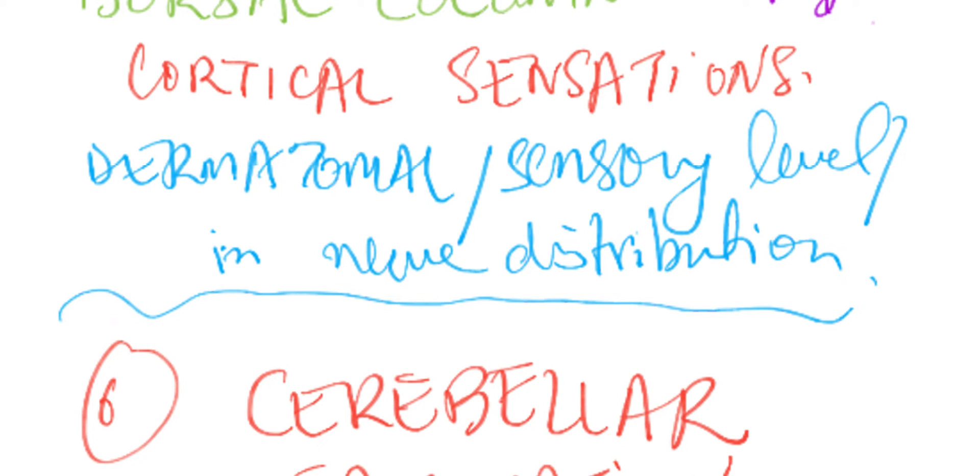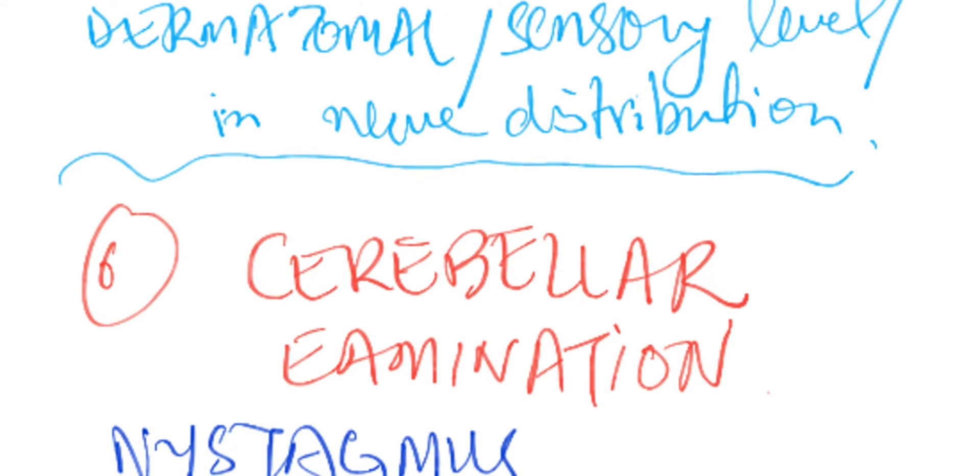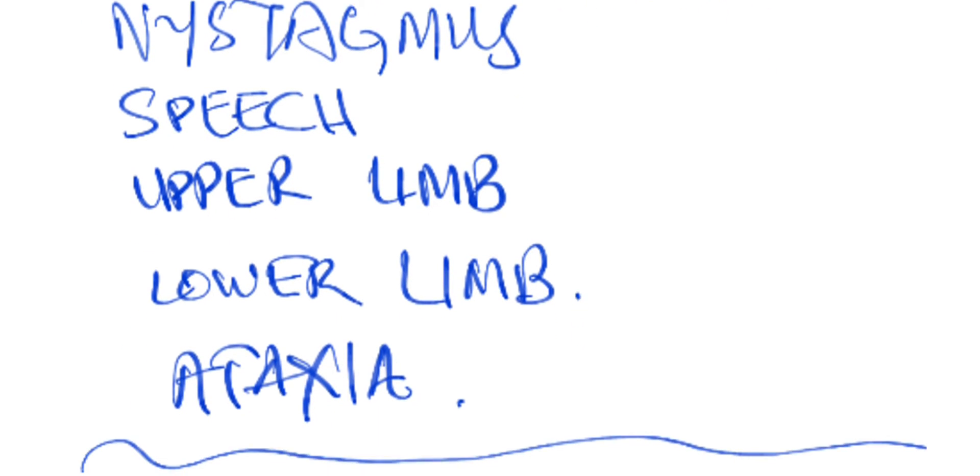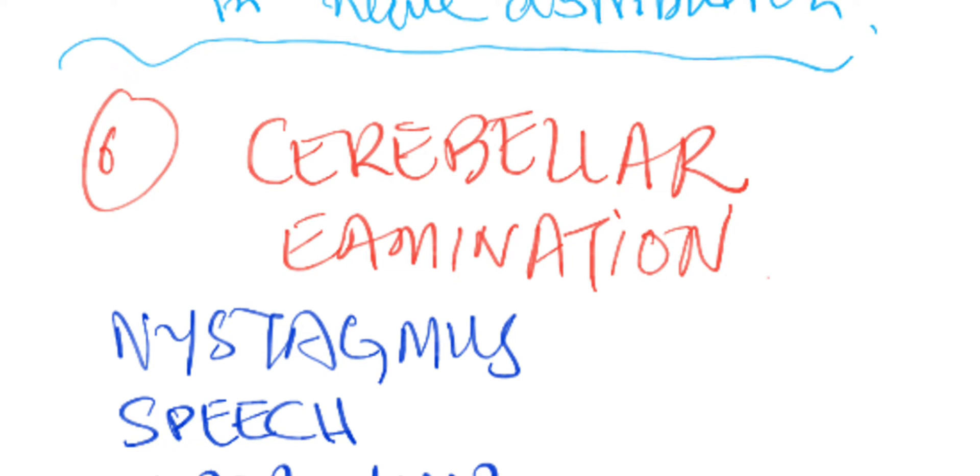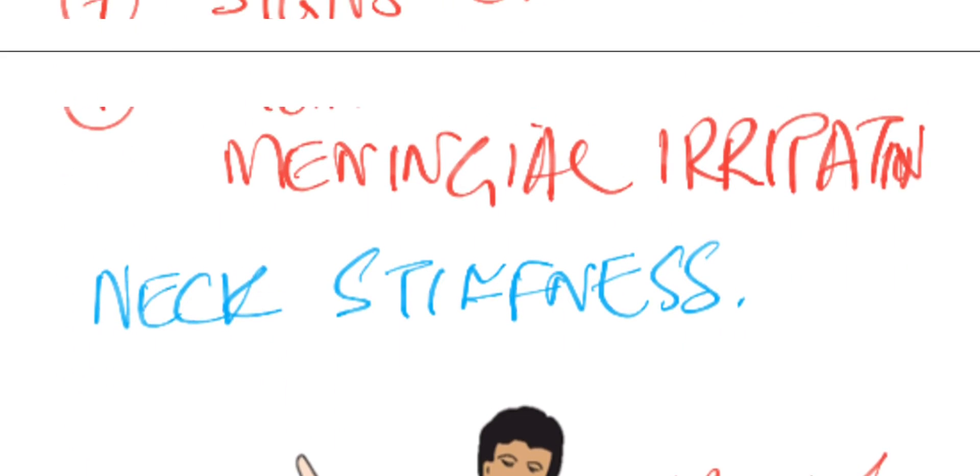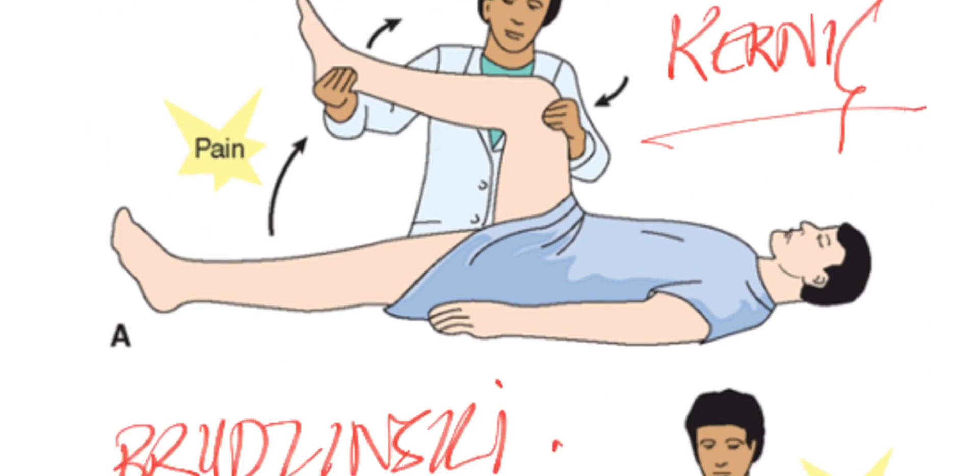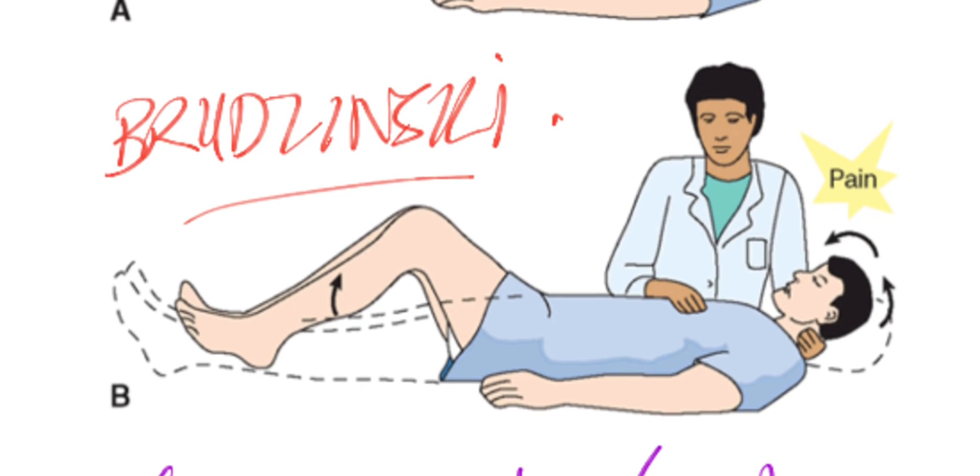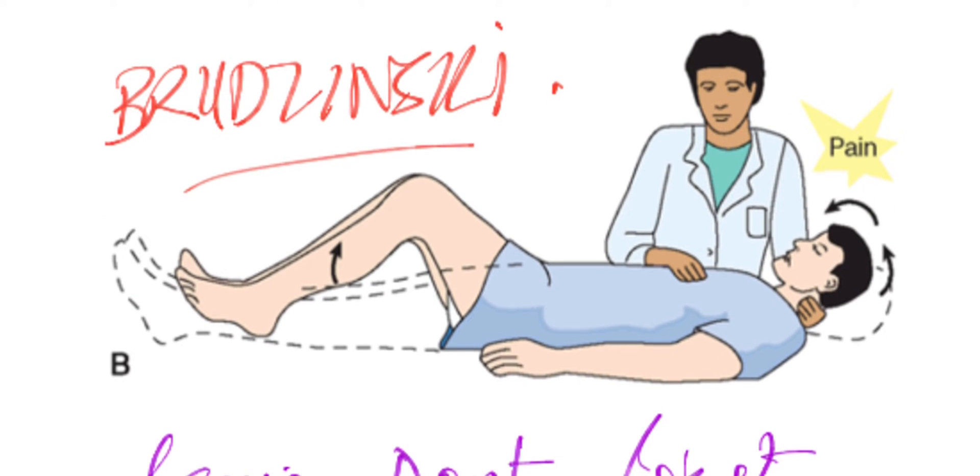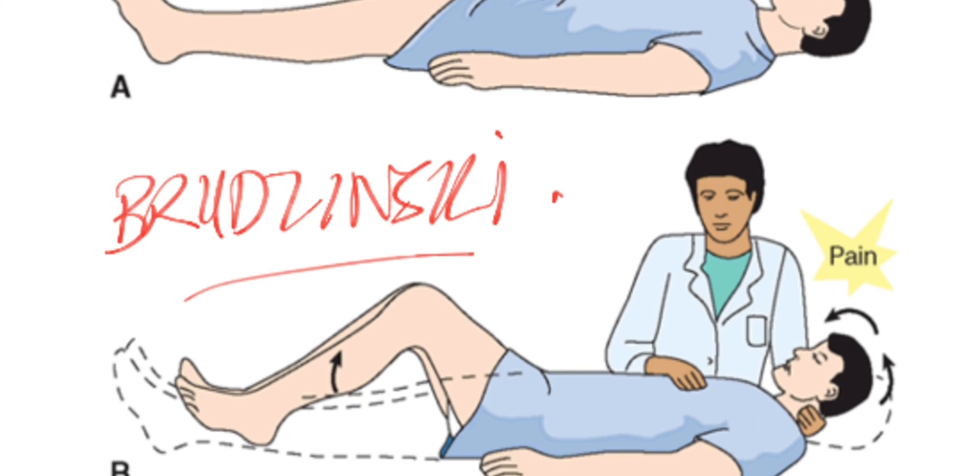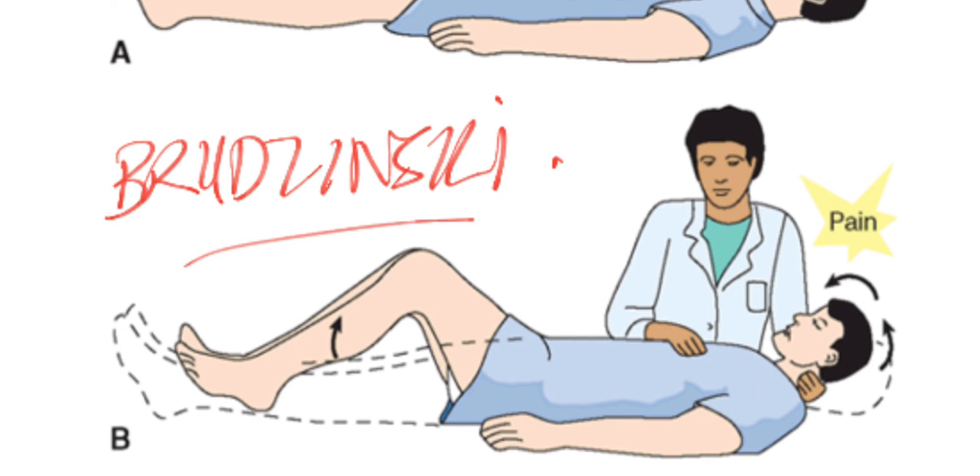Sixth up is cerebellar examination. So you check nystagmus, speech, signs in the upper limb, lower limb, and ataxia. Complete cerebellar examination is at number six. And number seven is signs of meningeal irritation. You can look for neck stiffness. Here is the Kernig sign and here is the aptly named, I guess, Brudzinski sign. You check the difference between that: you fold the leg up and you check the leg flexing back up, the lower limb flexing back up when you apply pain through flexion of the neck.